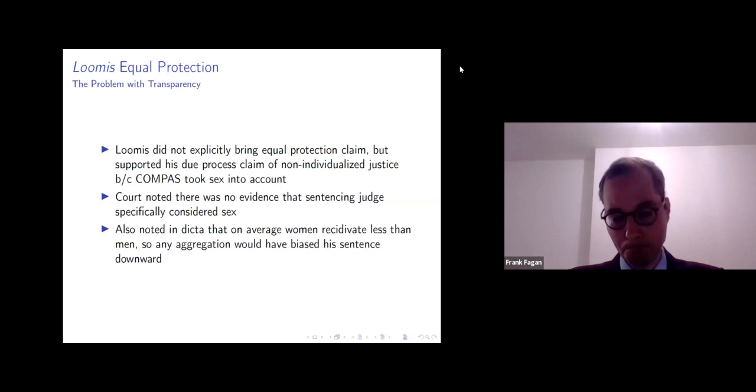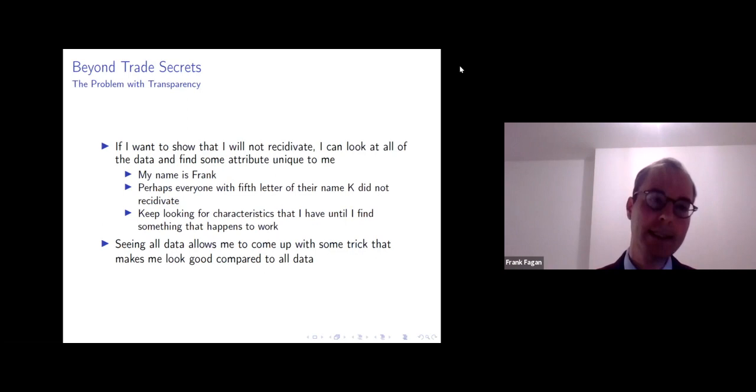So what I want to get into and what really is the heart of this paper is that this is not just a trade secret problem where we're trying to incentivize innovators to develop great and accurate machine learning algorithms that are useful for the state. What we show in the paper is that if all of the data is made available and if the algorithm is made available to defendants that they can retrofit. They can essentially search for some type of characteristic that they find, that individual characteristic or feature of themself that somehow tricks the algorithm into making them look better compared to everyone in the data set.